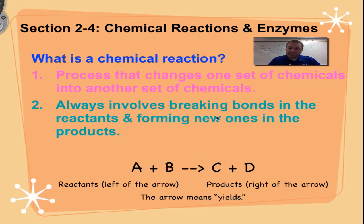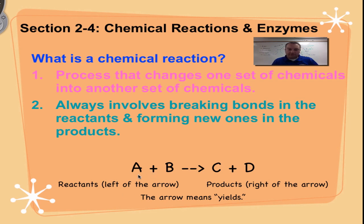What is a chemical reaction? It's a series of events where one set of chemicals gets turned into a different set of chemicals, done by rearranging the chemical bonds. These different sets of chemicals are called the reactants and the products. Anything left of the arrow is a reactant — for example, chemical A plus chemical B yields chemicals C and D. The arrow always points to the products and means 'yields.'